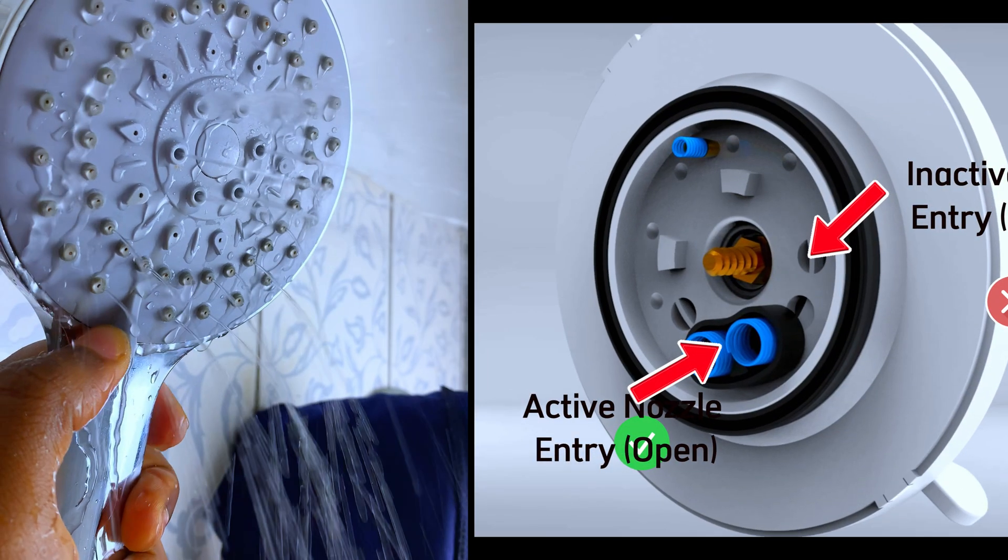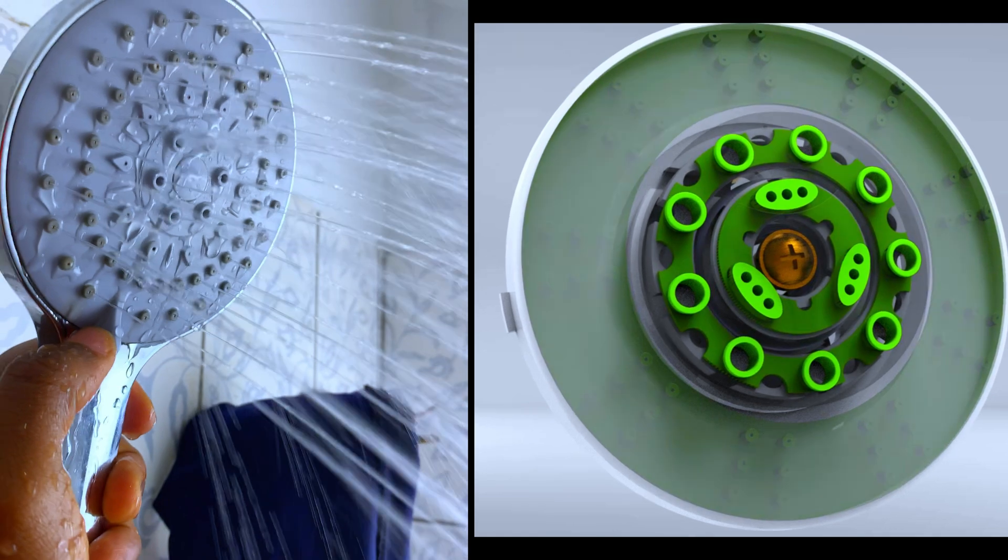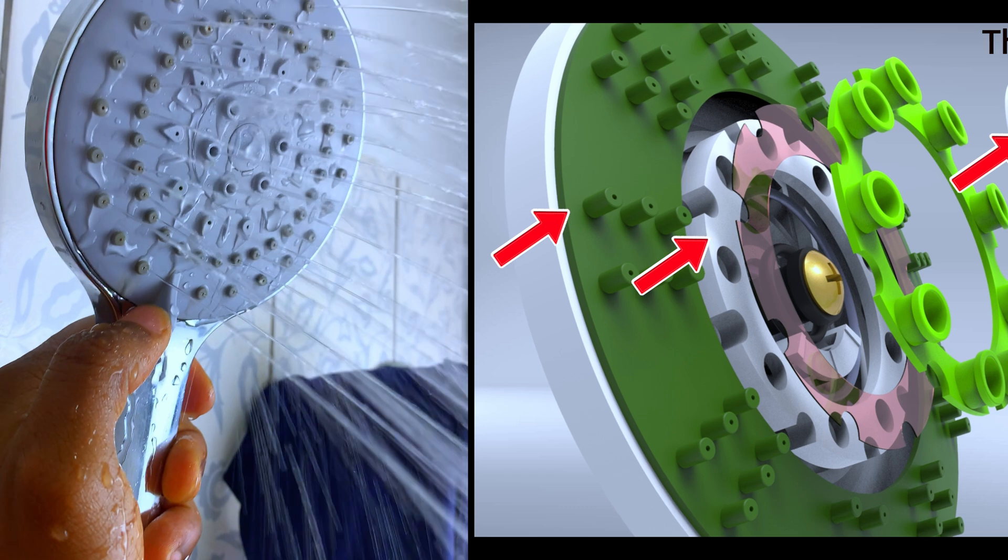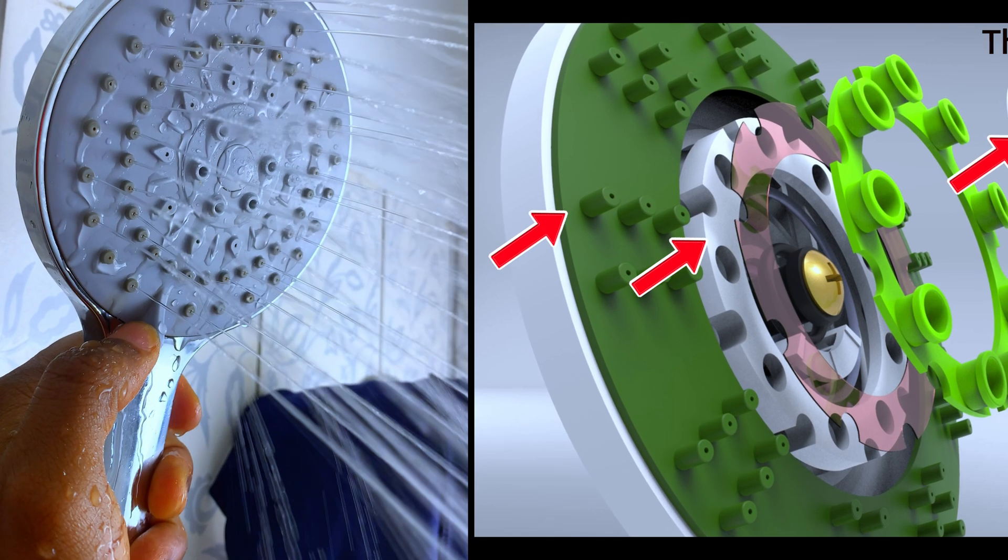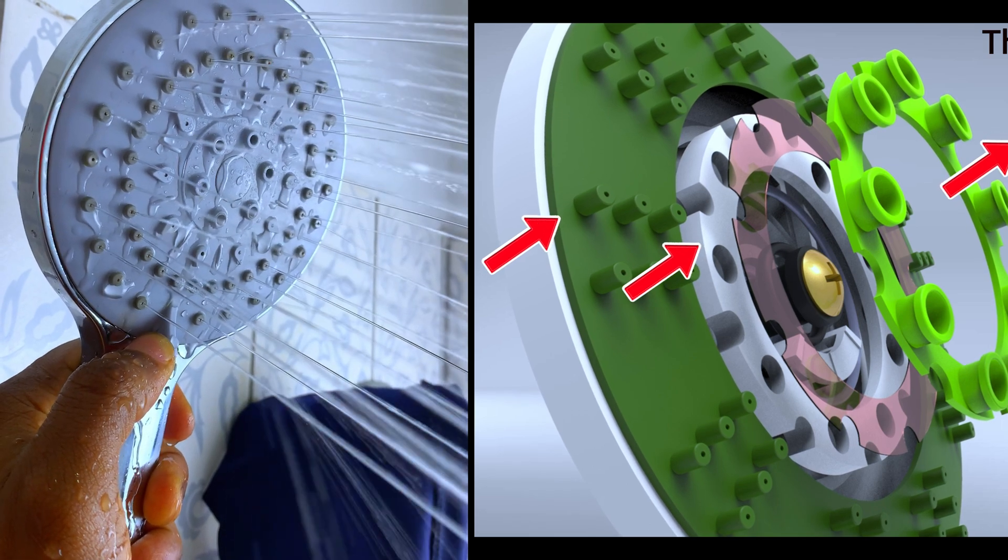Now for the mist spray pattern. The diverter plate is positioned in such a way as to block the larger nozzles, forcing water through tiny holes. Water is just dispersed widely and finely. The overall effect is a soft low pressure mist which is ideal for cooling or gentle rinsing.